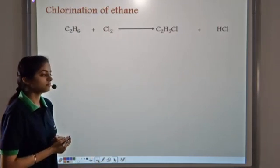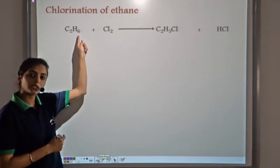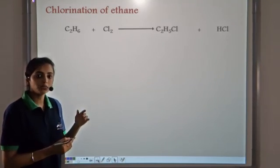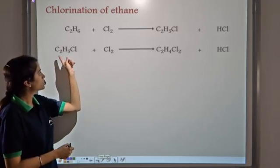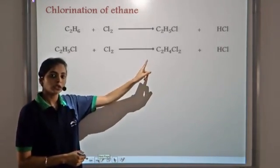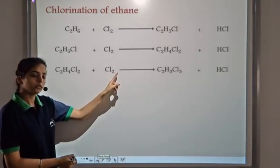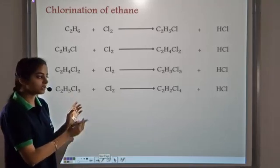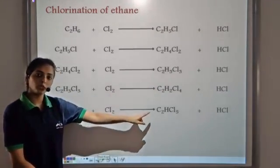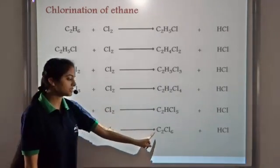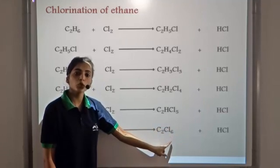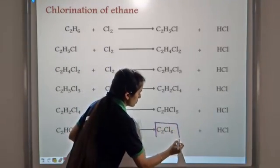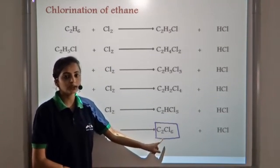Let's take ethane. When ethane reacts with chlorine, first one hydrogen atom is replaced by a chlorine atom to form C2H5Cl plus HCl. This process continues step by step: C2H5Cl → C2H4Cl2 → C2H3Cl3 → C2H2Cl4 → C2HCl5 → C2Cl6. At the final step there is no more hydrogen atom to be replaced, so the substitution reaction stops. The final product of the substitution of ethane by chlorine is C2Cl6.